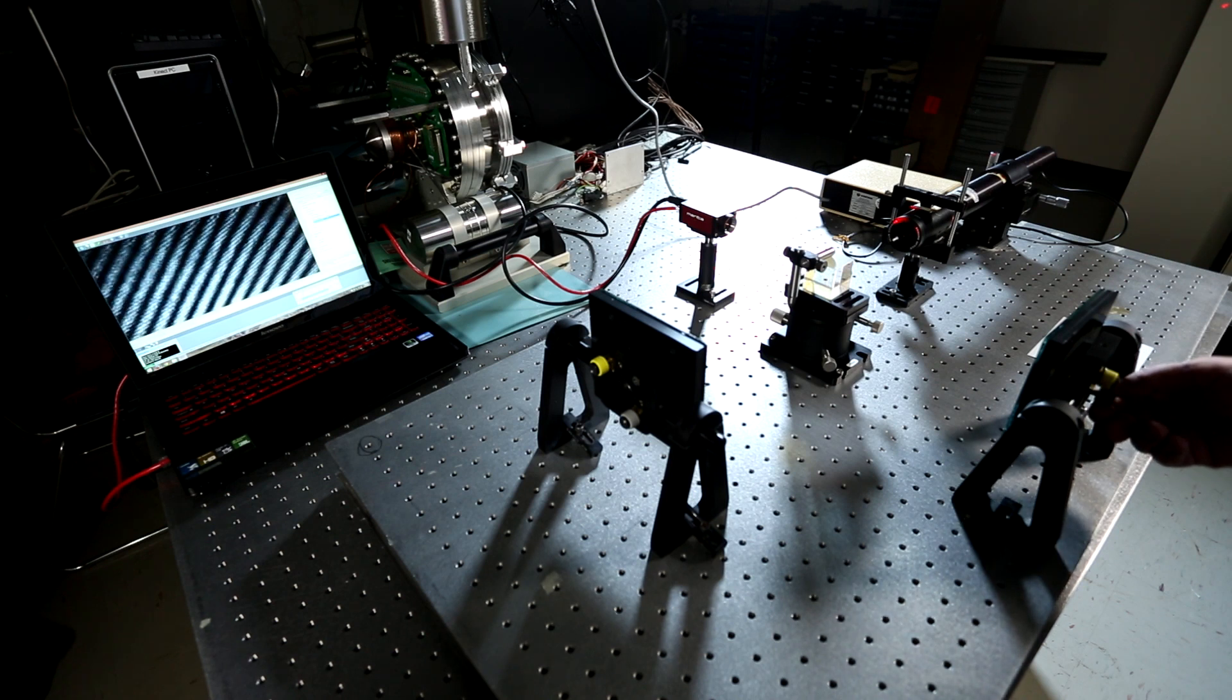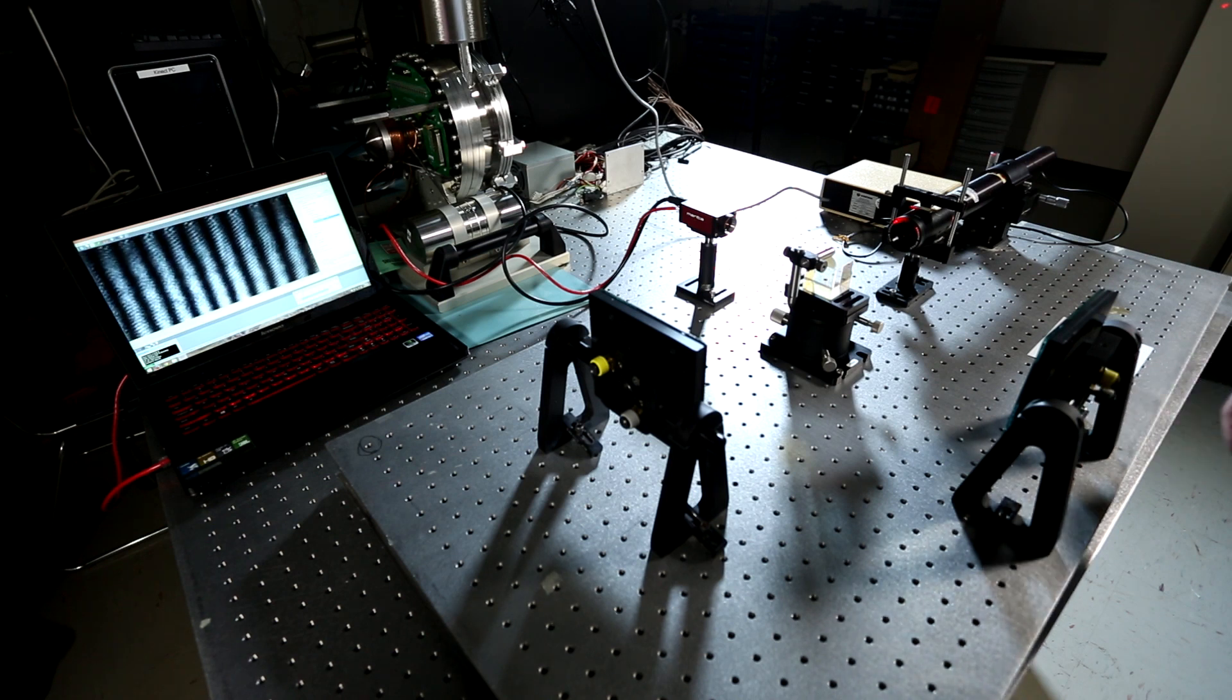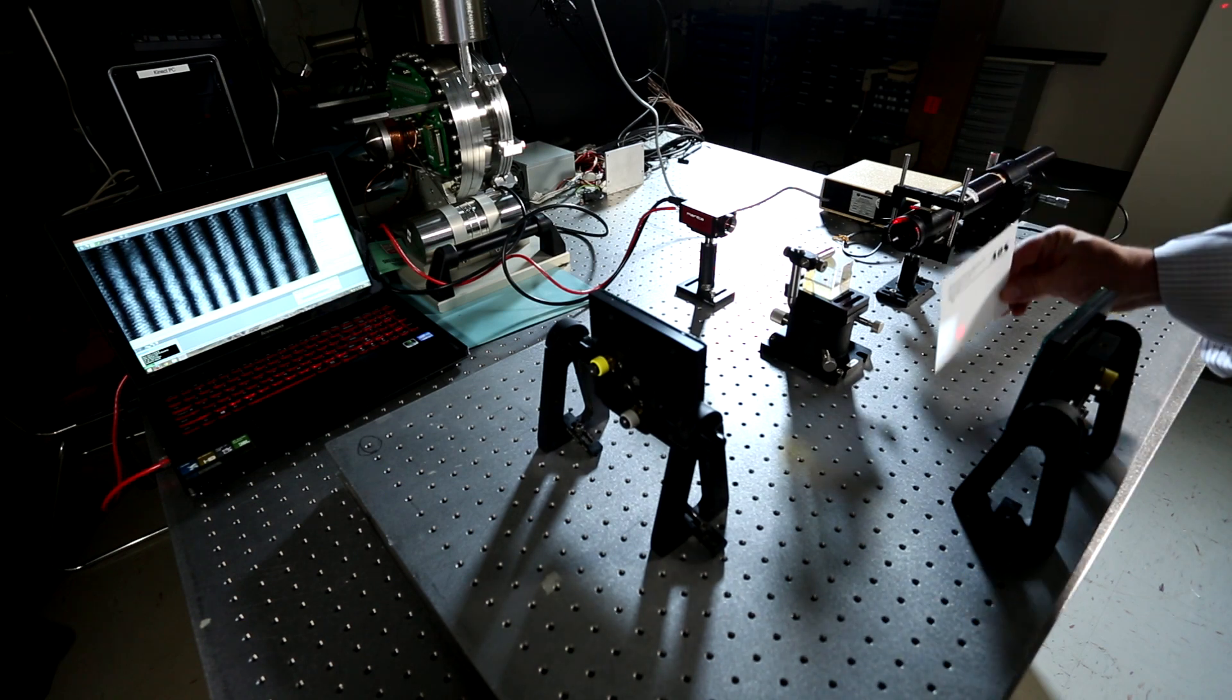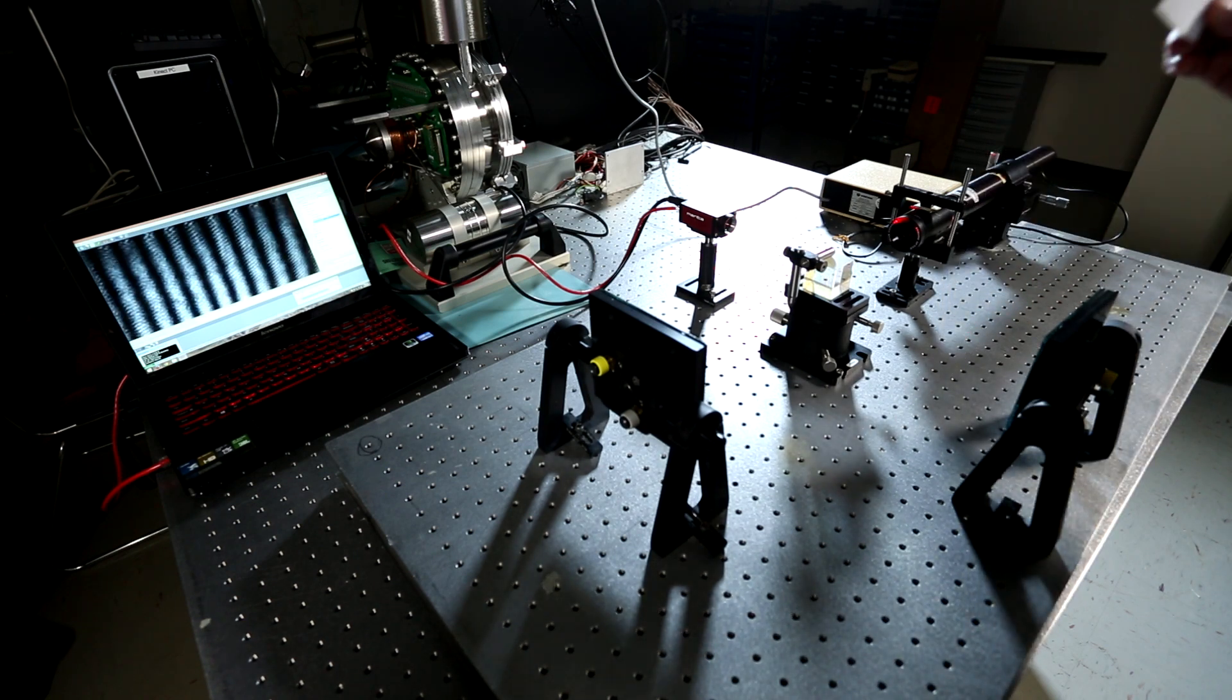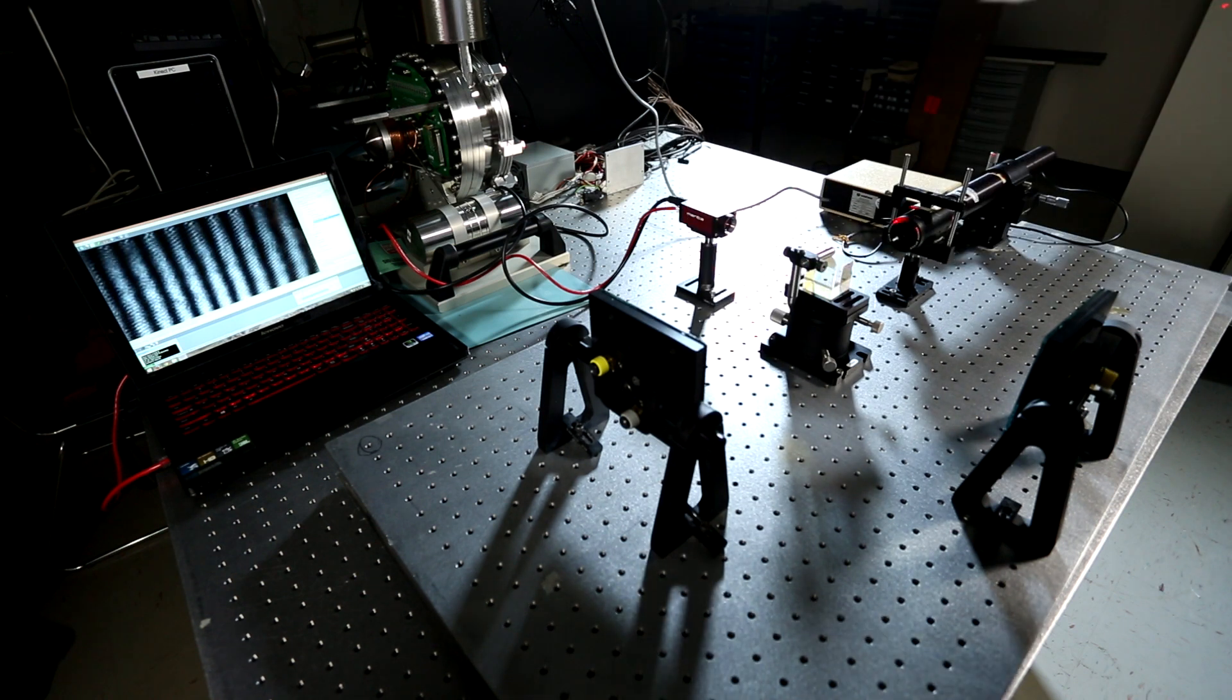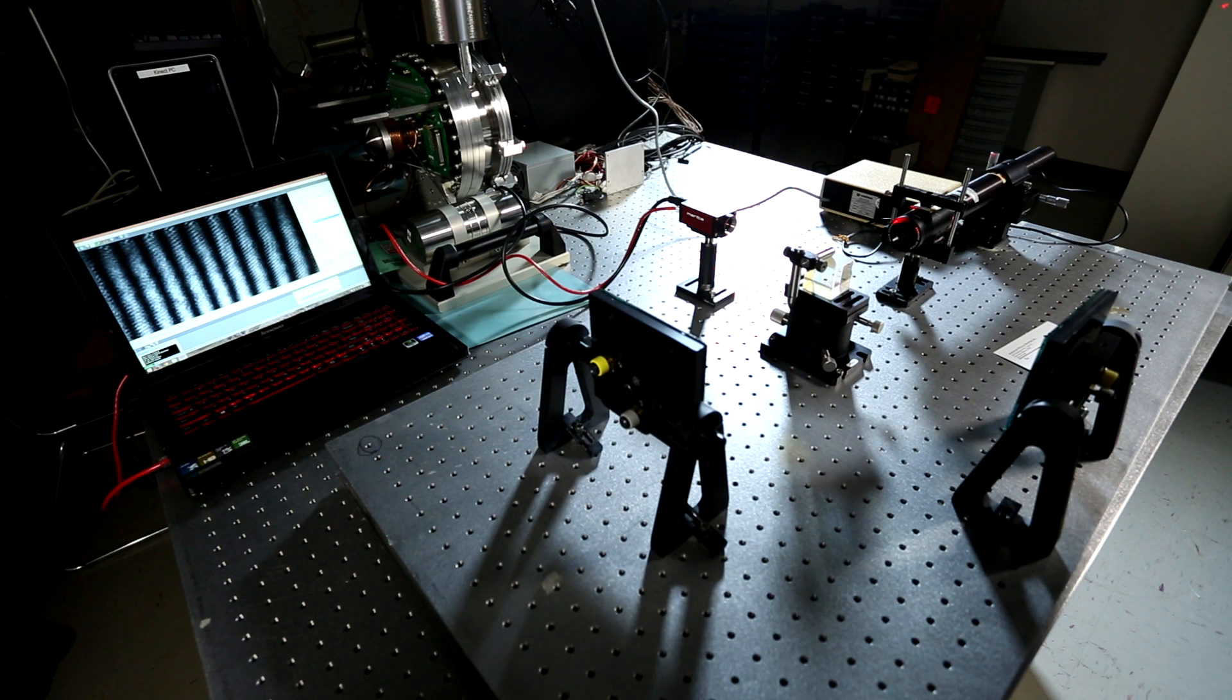They're getting bigger. So we have a good set of fringes, and then if we take either beam, we can block that beam and the fringes go away, or we can block this beam and the fringes go away. You have to have both beams interfering with each other to get the fringes.